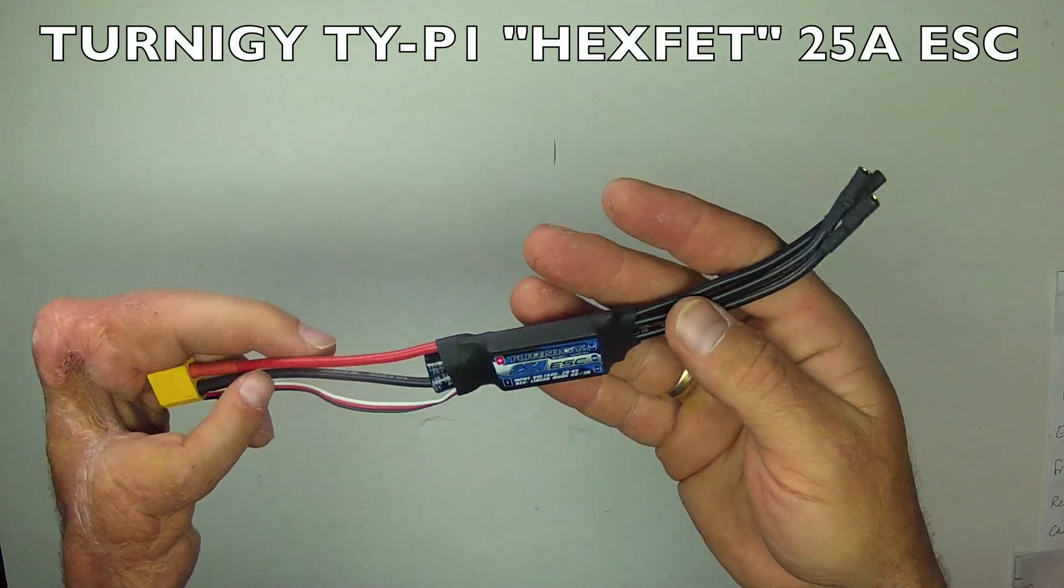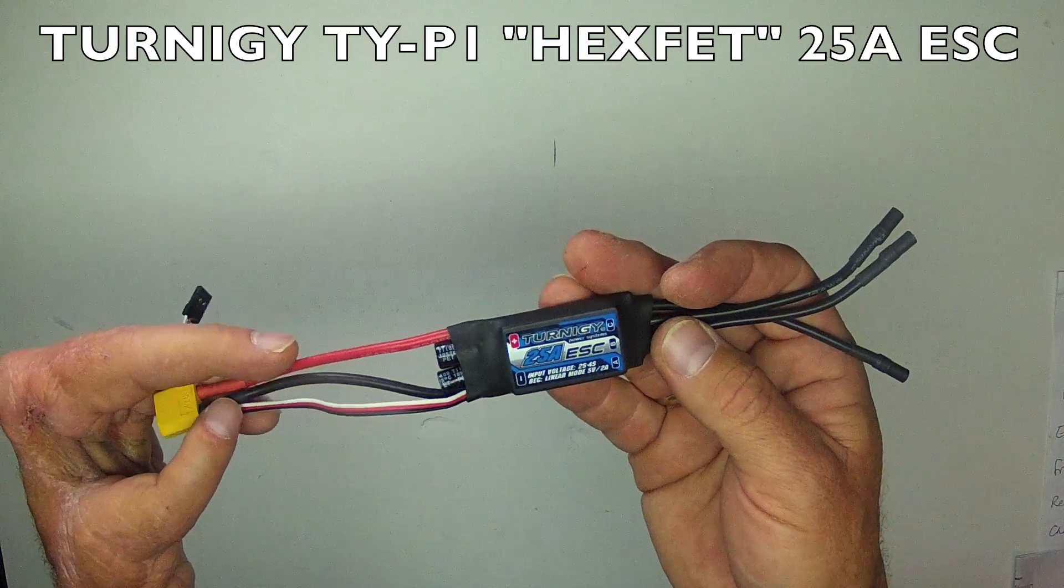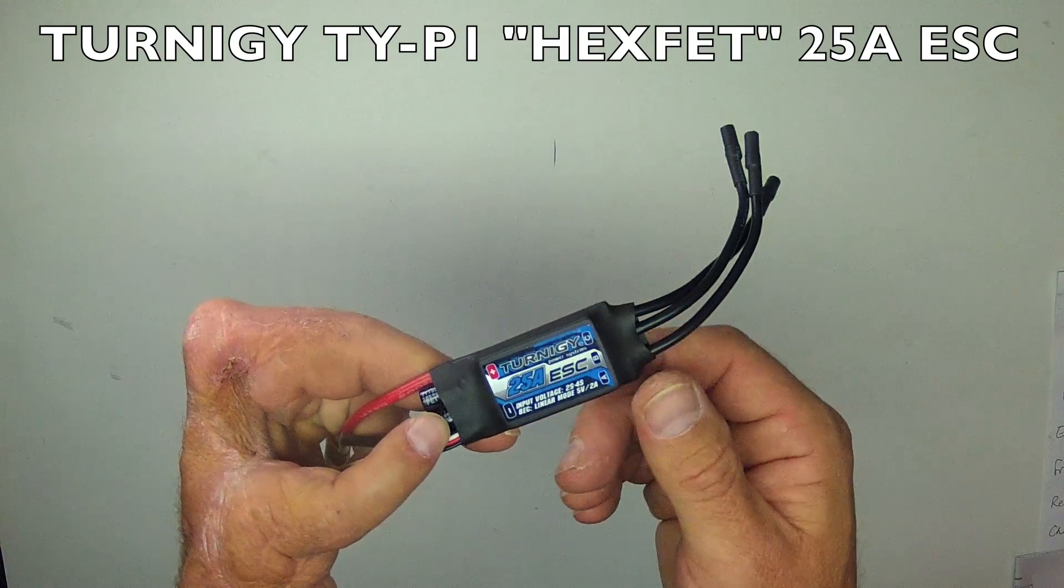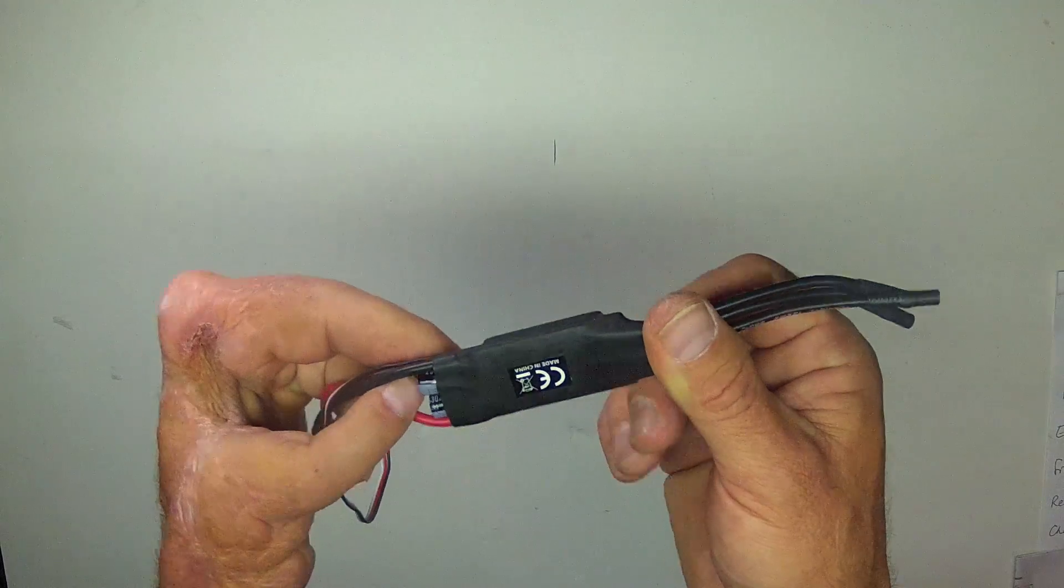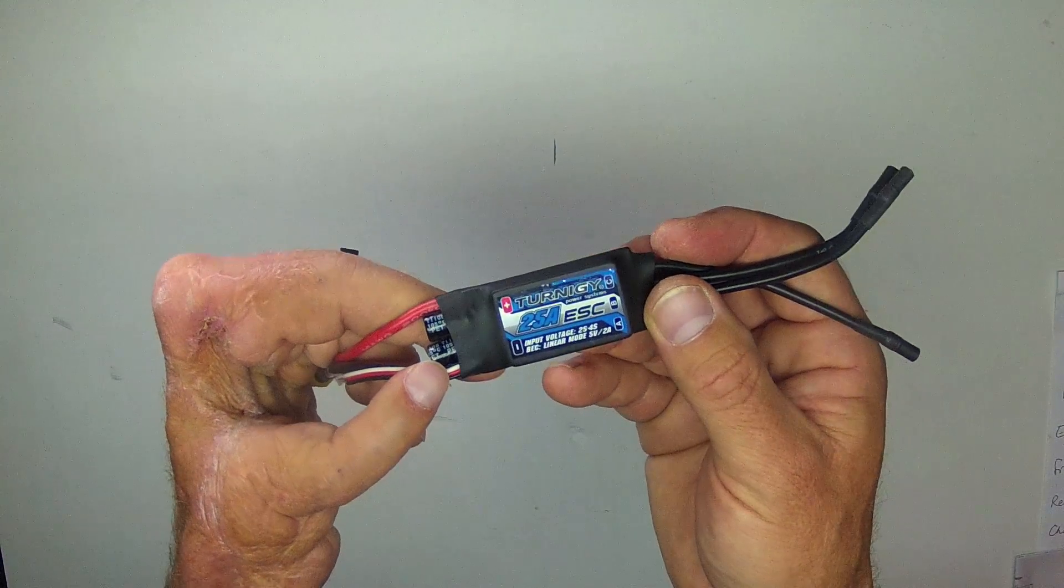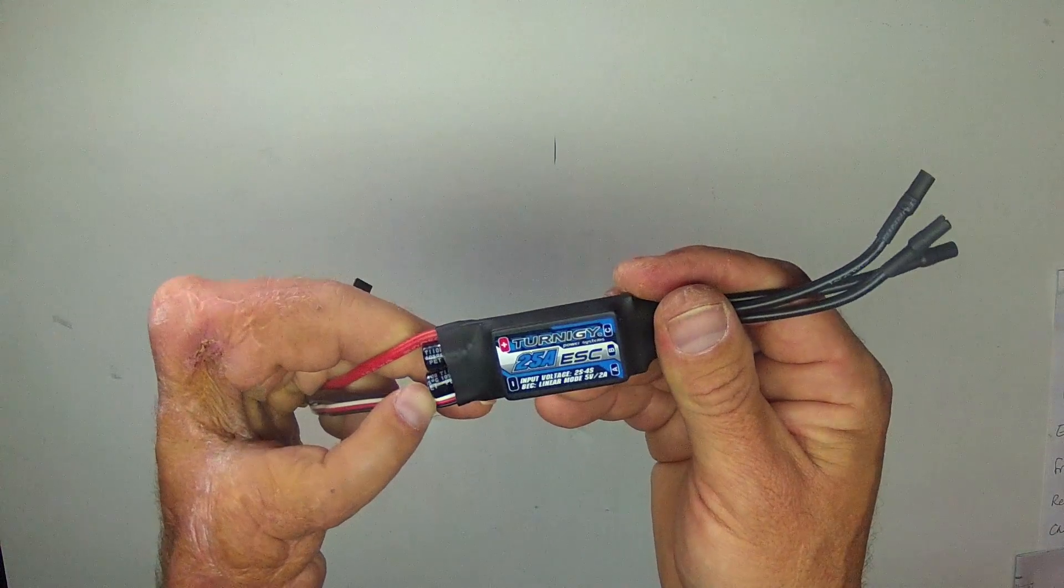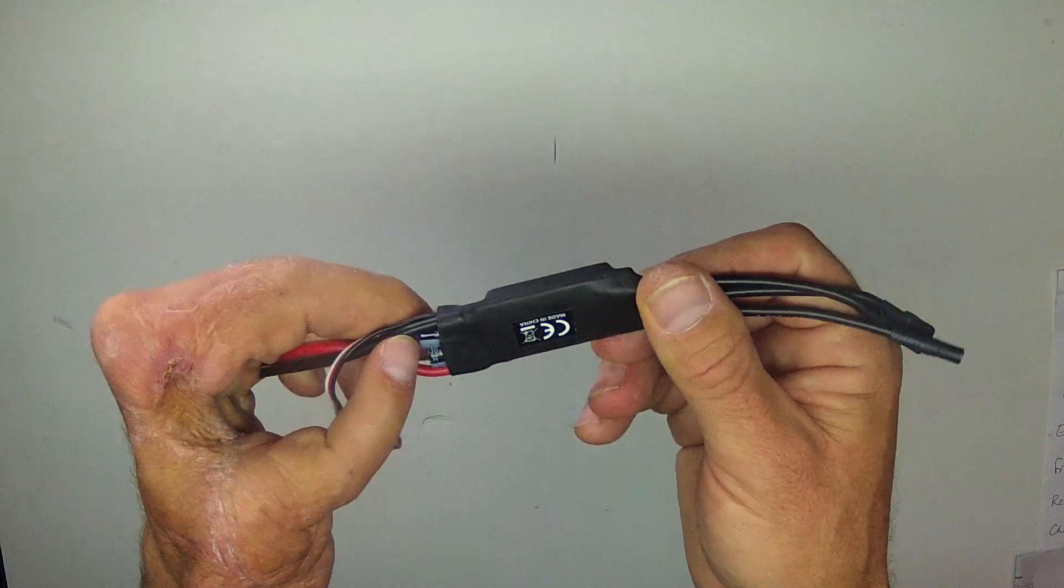This is the Turnigy Hexfet 25 Amp ESC from Hobby King. This is only $11. It is rated for 25 Amps up to 30 Amp burst. However, the transistors are rated for somewhat higher than that. Therefore, this should be a fairly trustworthy ESC. It has a 2 Amp linear mode battery eliminator circuit. And so you could probably confidently run up to about 4 servos from this.